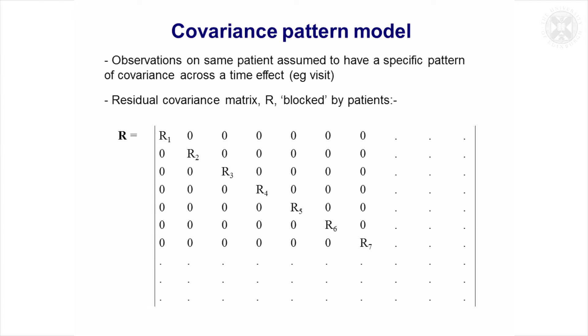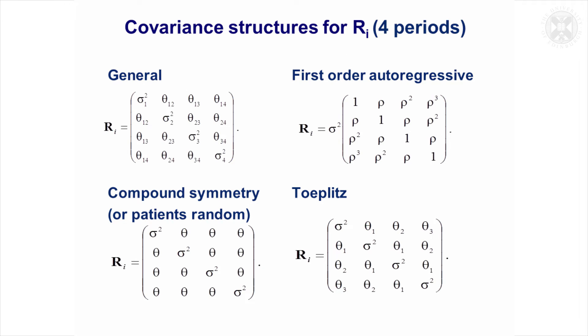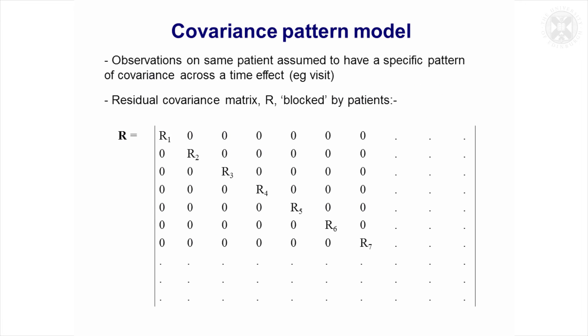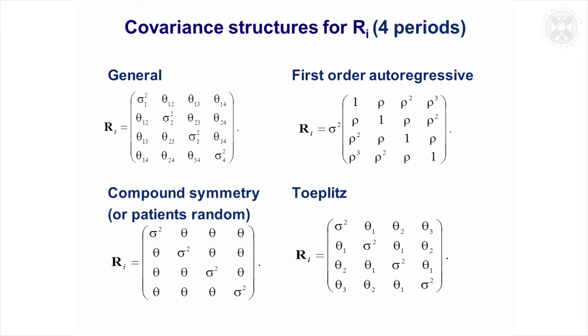There are various ways that can be done, and these are some examples. These are the R blocks from that matrix. In this hypothetical situation, there are four repeated measurements, so the blocks are four by four. They show the variance down the diagonal for each of the time points.